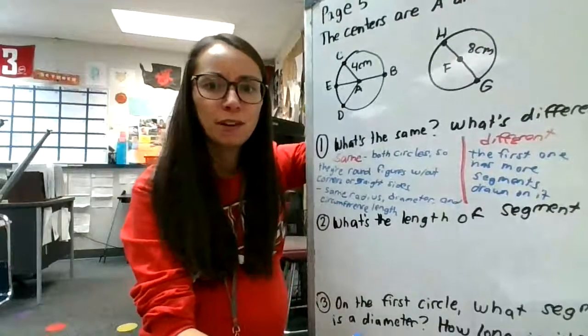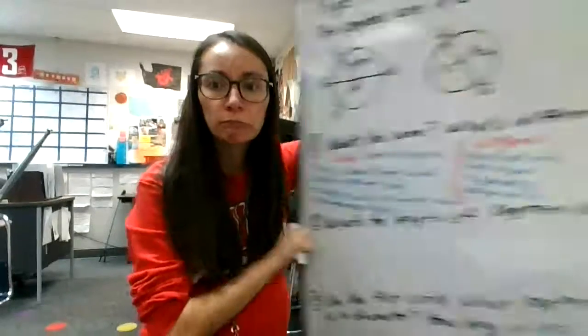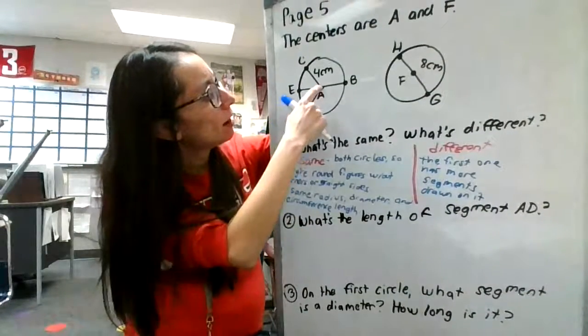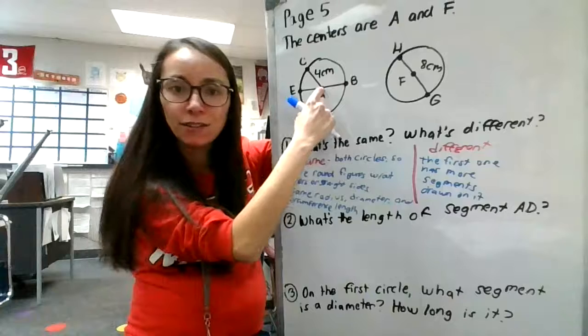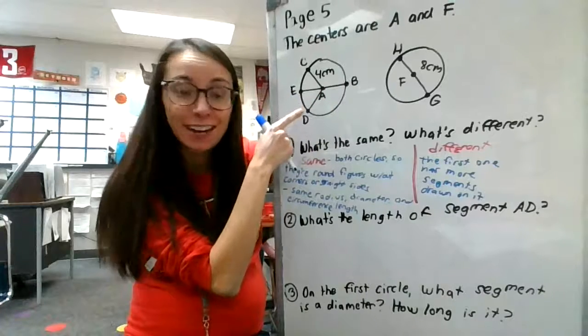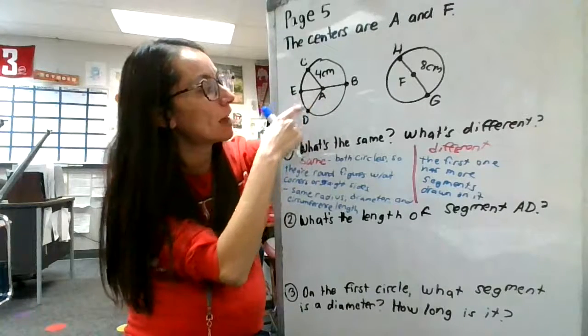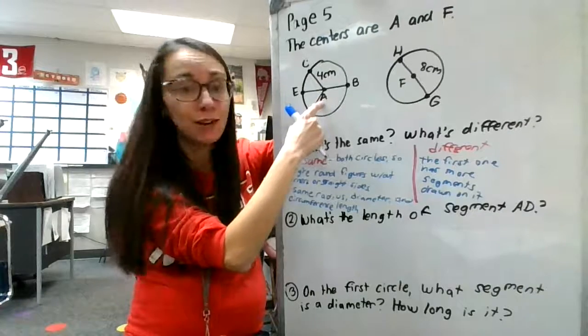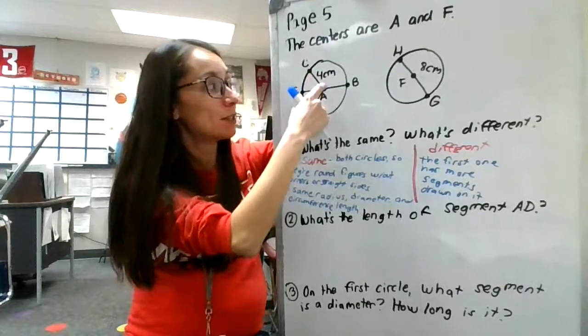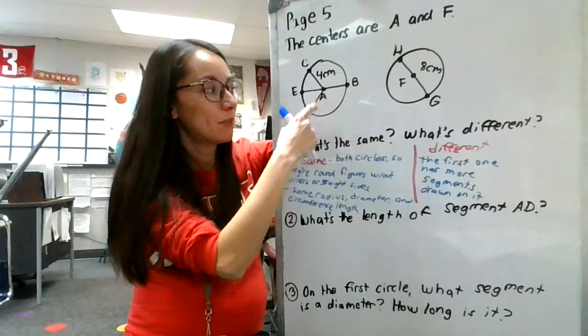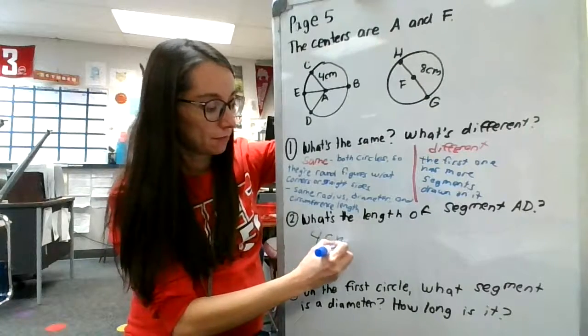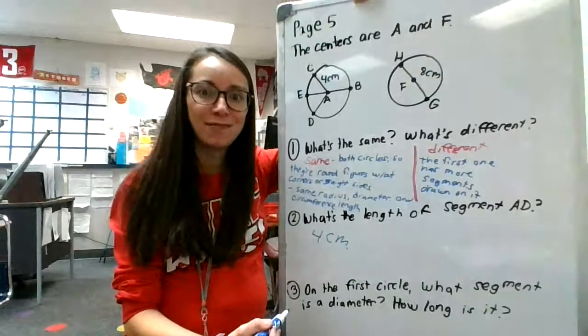Number two, what's the length of segment AD? So we got to find AD. A to D. Oh, what's that called? It's a radius. So what's the radius length on this guy? Well, since this right here is a radius, because they told us A is the center. So from the outside to the center, boom, it's four centimeters. So from A to D, that's also four centimeters. Take a second, make sure that makes sense to you.